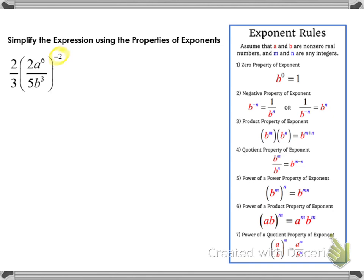The first thing we want to notice is that the quotient inside the parentheses is being raised to the power of negative 2. We're going to use a combination of two rules to address the quotient being raised to the negative second power, and we're going to do that before we do anything with the two-thirds that's being multiplied. We'll focus on the quotient 2a to the sixth over 5b to the third, using exponent rule number 7 — the power of a quotient property — and also rule number 5, the power of a power property.